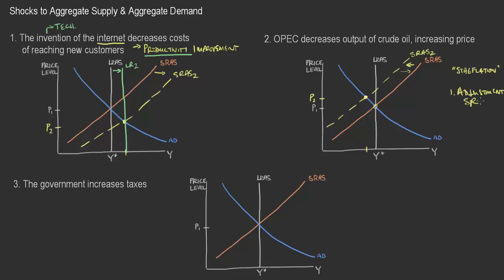This adjustment would be a shift in the short-run aggregate supply back to the right. Businesses would lower the price on everything else to compensate for the higher price level, which would lower wages and contract prices back down. There's a secondary response as well: the Fed could try to stimulate the fallen output by increasing the money supply or decreasing the interest rate. This would affect the aggregate demand curve — a Fed stimulus response.